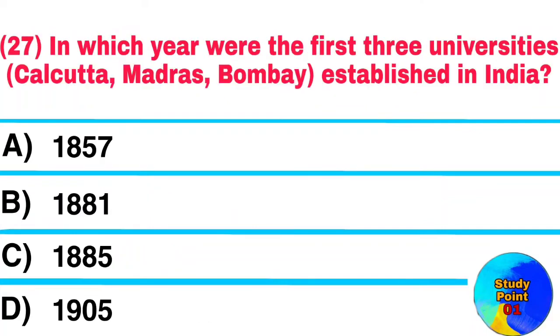Question No. 27. In which year were the first three universities — Calcutta, Madras, and Bombay — established in India? Answer: 1857.